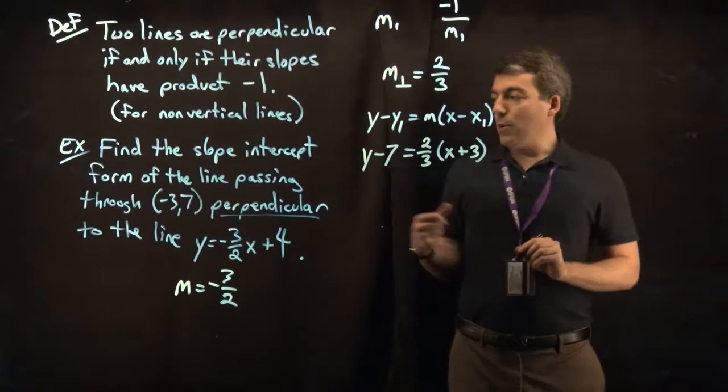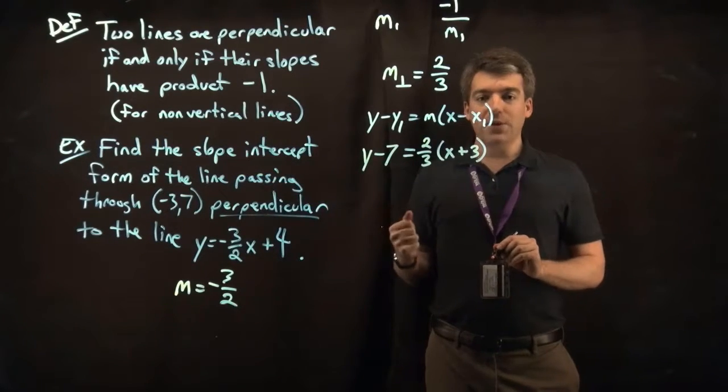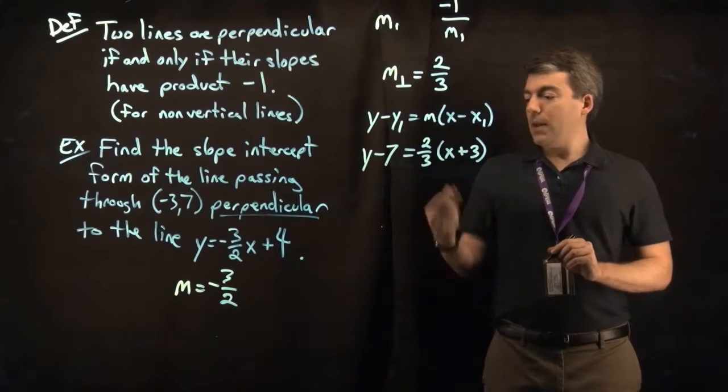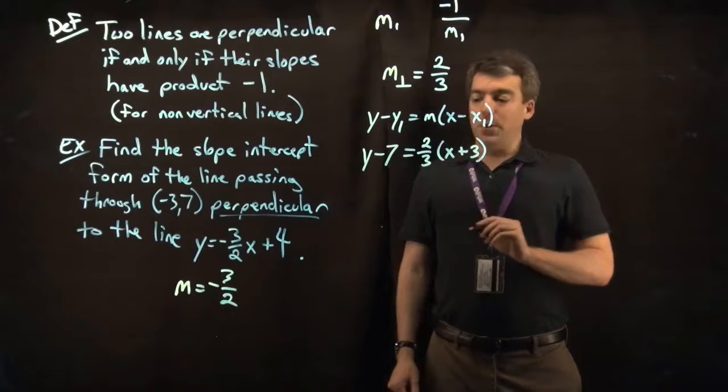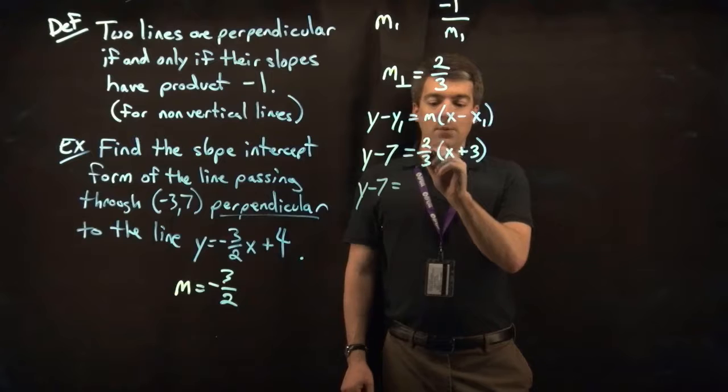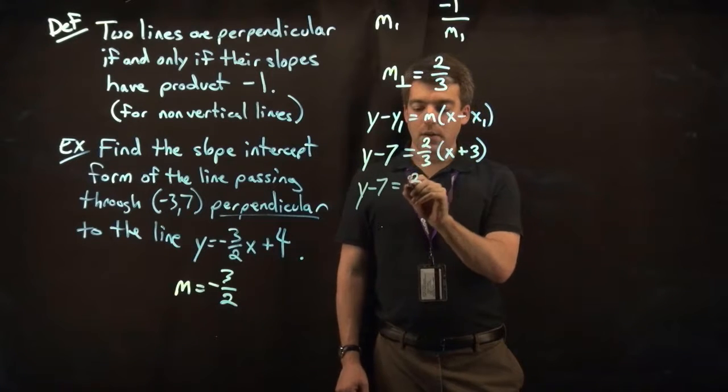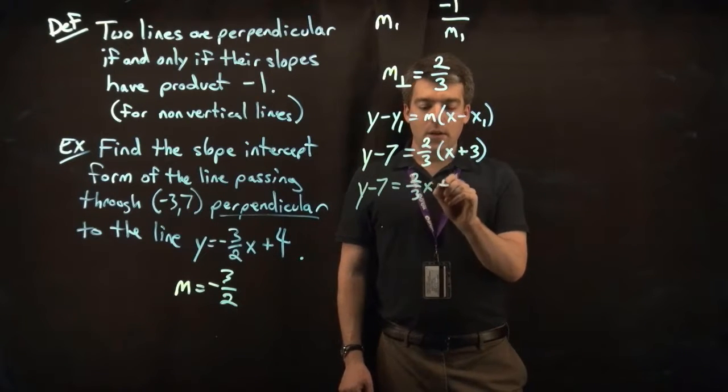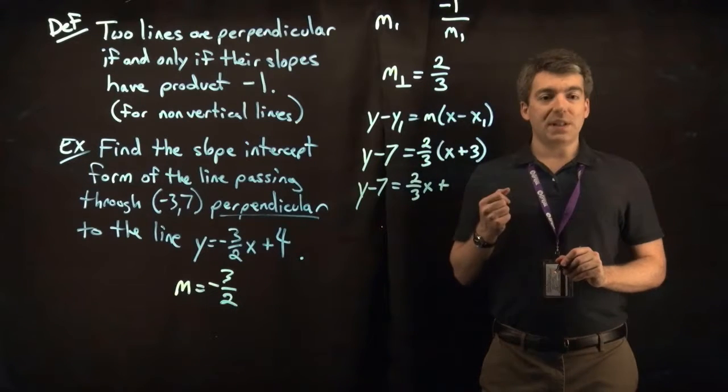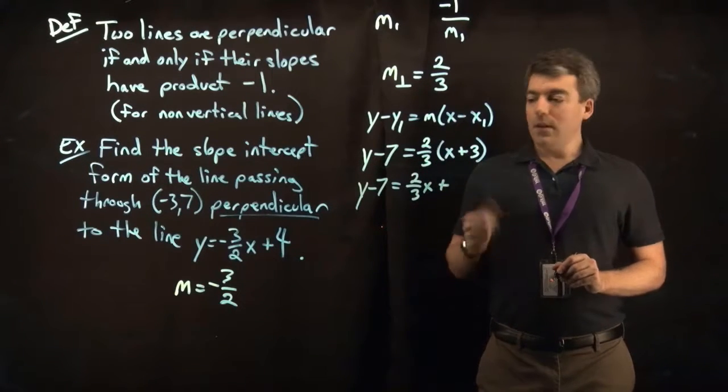Now the example here wants us to put this into slope intercept form, so we'll put this into y equals mx plus b form. First thing to do would be to distribute the 2 thirds into the x plus 3. So y minus 7 equals 2 thirds x plus 2 thirds times 3. Well, 3 times 2 is 6, divided by 3 is 2.